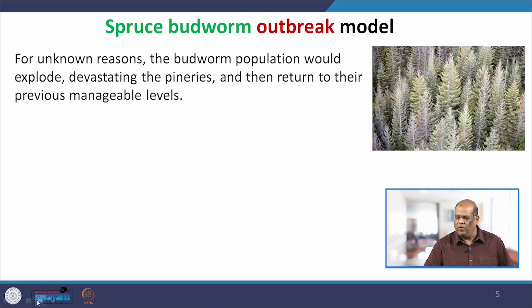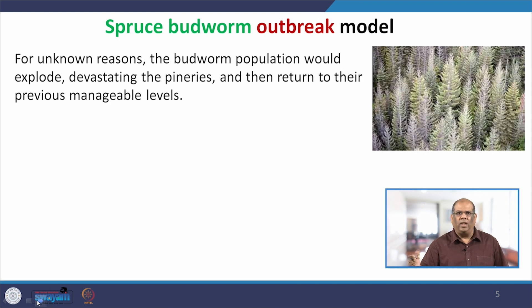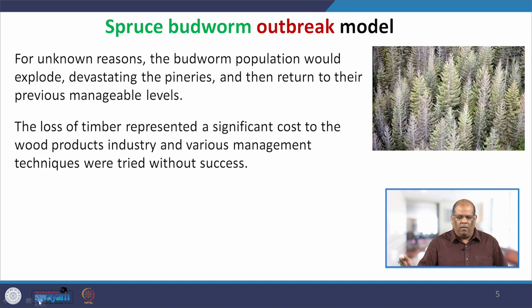The figure you see is a bit whitish, but it is supposed to be greenish. The reason is that all the trees are infested with this insect — this is an aerial view of the forest. For some unknown reason, the budworm population just explodes and there is a devastating effect on the pine trees. But then they return to manageable levels, and management is required because of the timber industry — the woods come from these pine trees and there is a huge loss to the timber industry.